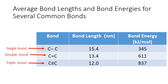Notice that as more electrons are shared between the atoms, the bond length decreases. This is because those shared electrons are exerting an even stronger pull on the two nuclei, pulling them even closer together. Notice that the closer the two atoms can get to each other, the greater the bond energy. By convention, covalent bond energies are reported as positive values, indicating the energy required to break the bond.